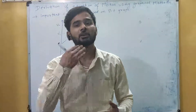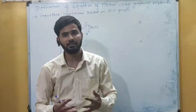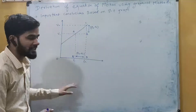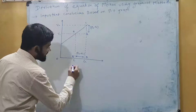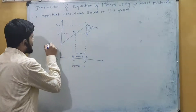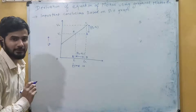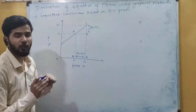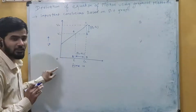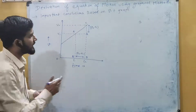We will derive the conclusions first, and then use those conclusions to derive the equations of motion using graphical methods. So here, if we have this velocity-time graph, we have time on the x-axis and velocity on the y-axis. You can see it represents uniform motion where the starting point is not from the origin but from some other point.